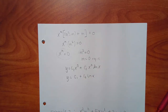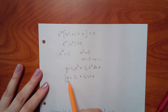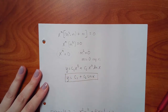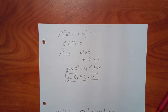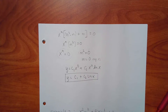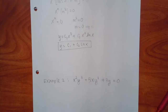With m = 0 repeated, the solution is y = c1*x^0 + c2*x^0*ln(x). Since x^0 = 1, this simplifies to y = c1 + c2*ln(x). That's the general solution. Since it was homogeneous, once you have the formula you're done — no need to find yp.